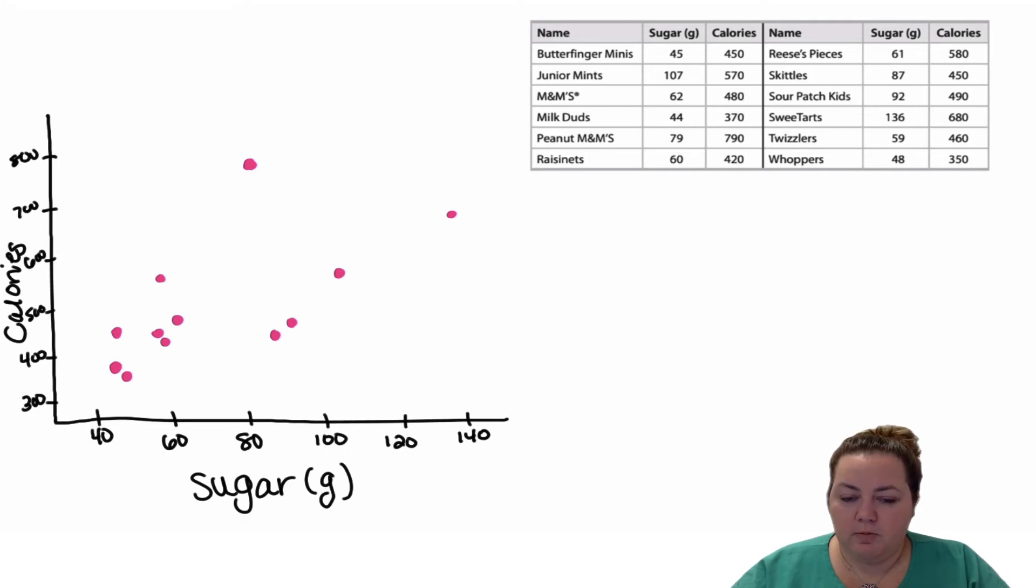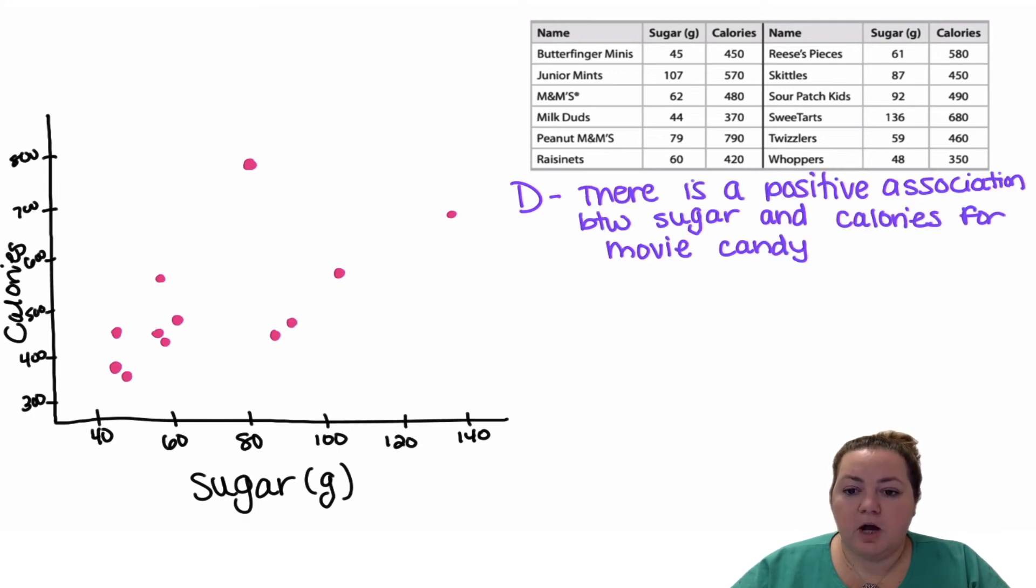Now I want to interpret this scatter plot and see what it tells us. D stands for direction. I would say that this is positive. We read a graph like we read a sentence, from left to right. When I look at it from left to right it's going upwards. So there is a positive association between sugar and calories for movie theater candy.